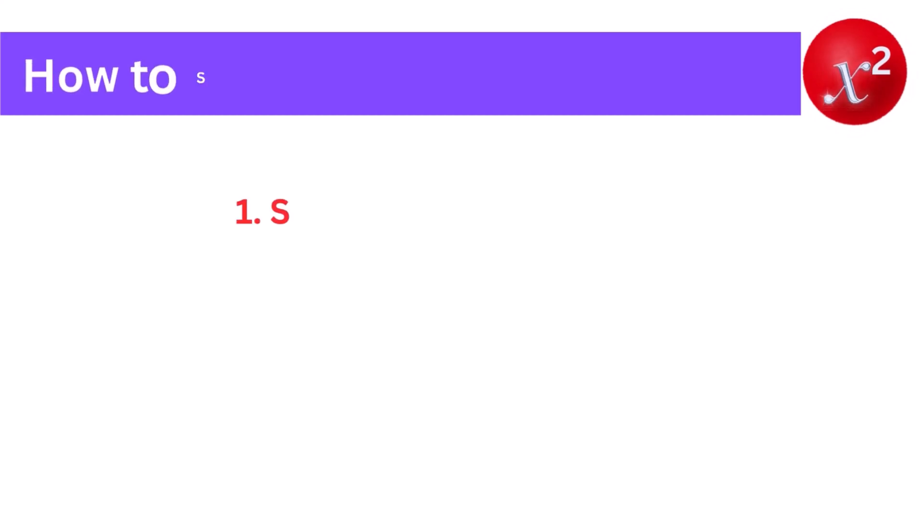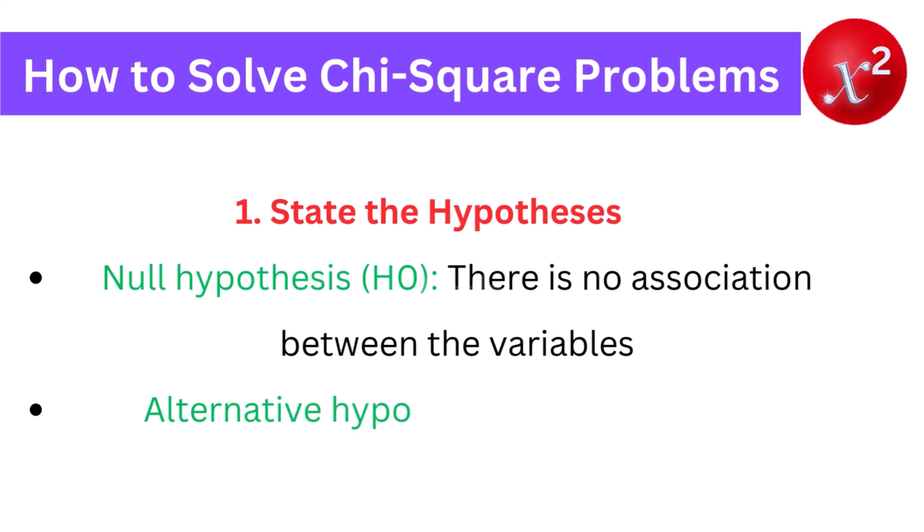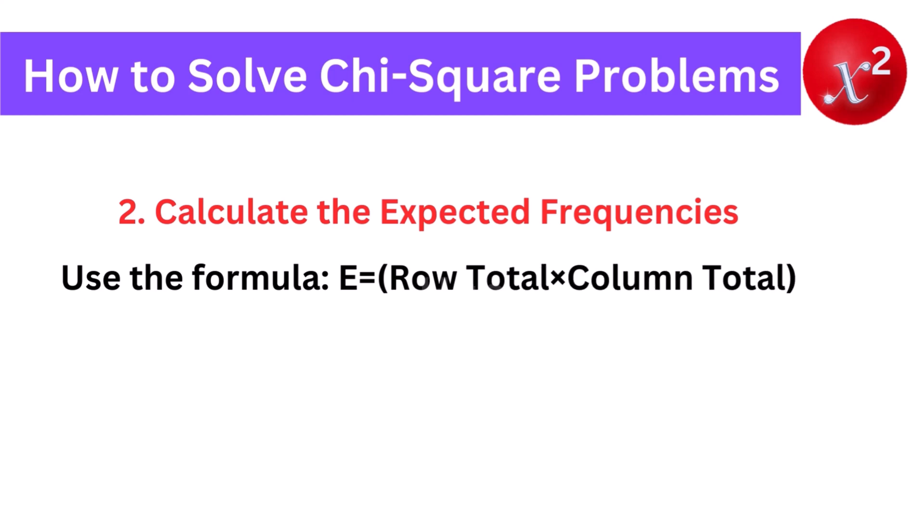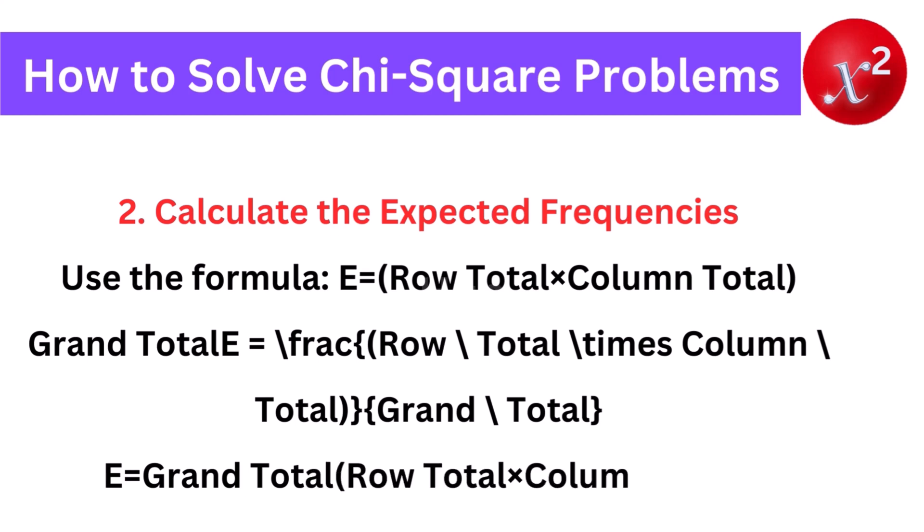How to solve chi-square problems. 1. State the hypotheses. Null hypothesis, H0, there is no association between the variables. Alternative hypothesis, H1, there is an association between the variables. 2. Calculate the expected frequencies. Use the formula: E equals row total times column total divided by grand total.